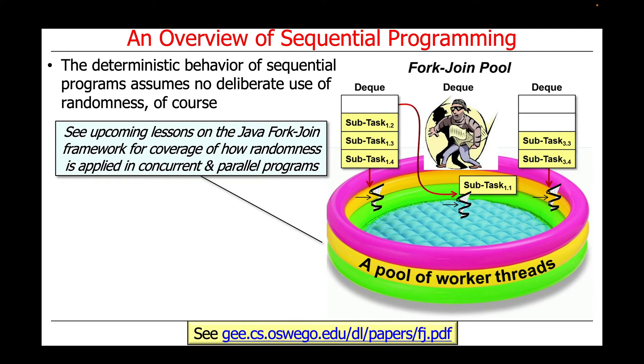Interestingly enough, it turns out that we will talk about the use of randomization in the context of the Java fork join framework, which uses a very interesting technique known as work stealing. It uses randomness to reduce the contention from which queue in a pool of threads and queues the work will be stolen from. But I'm getting ahead of myself, just giving you a preview of coming attractions.